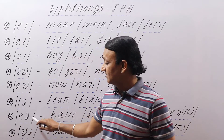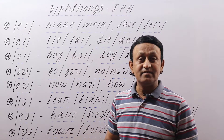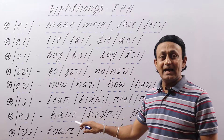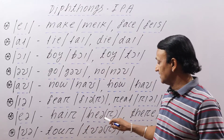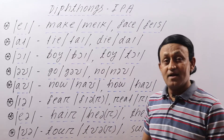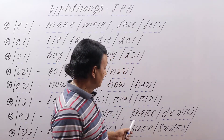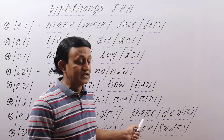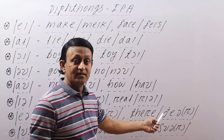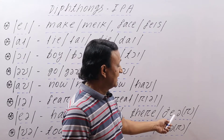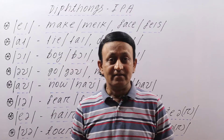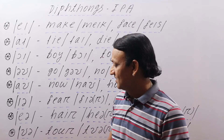We have the /eə/ sound — this is the /eə/ sound and the schwa sound together, making 'air'. In words like 'hair' — H-A-I-R — and 'there' — T-H-E-R-E. The delta sound and then the /eə/ sound makes it 'there'. So: hair, there — like that.